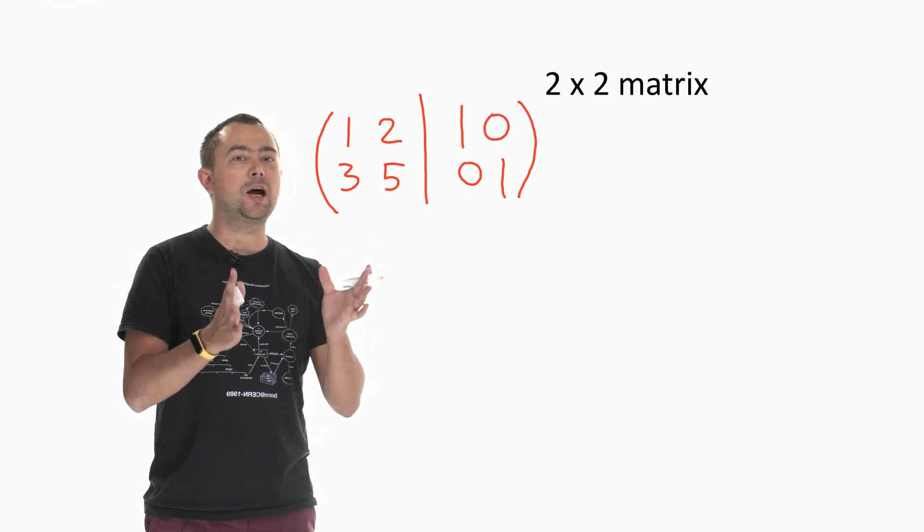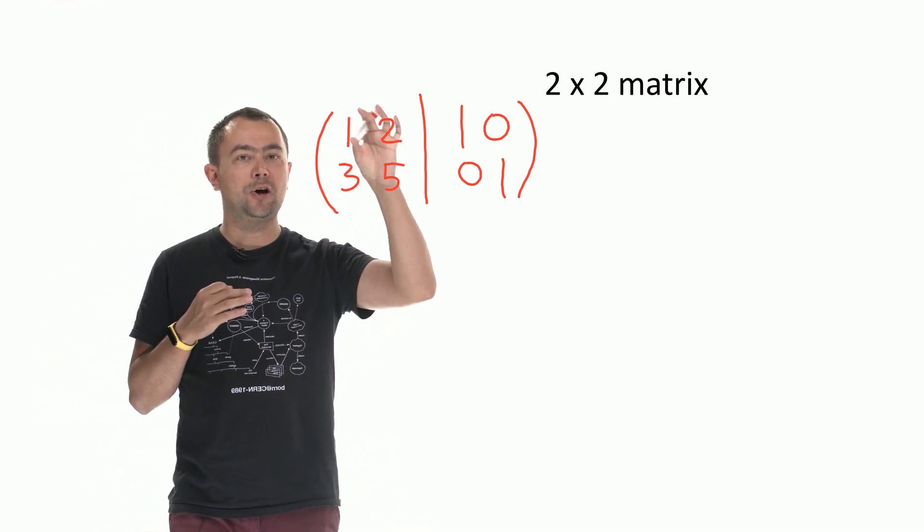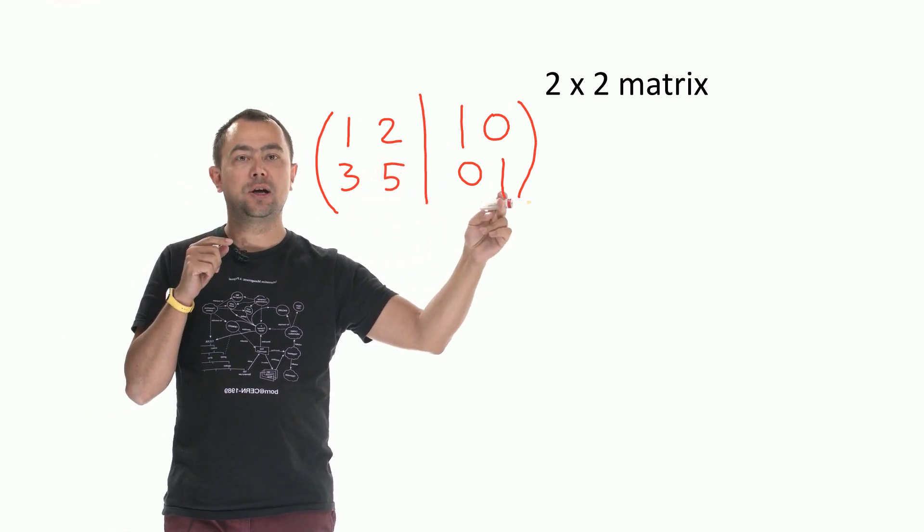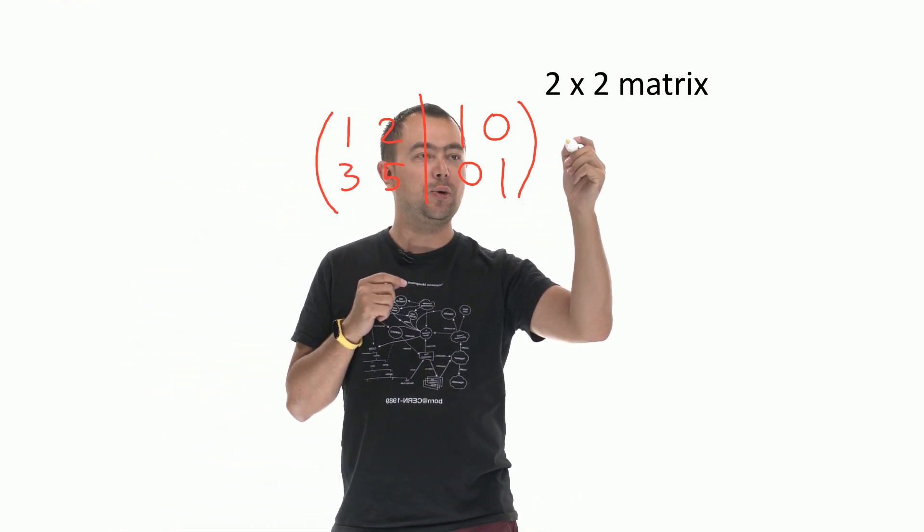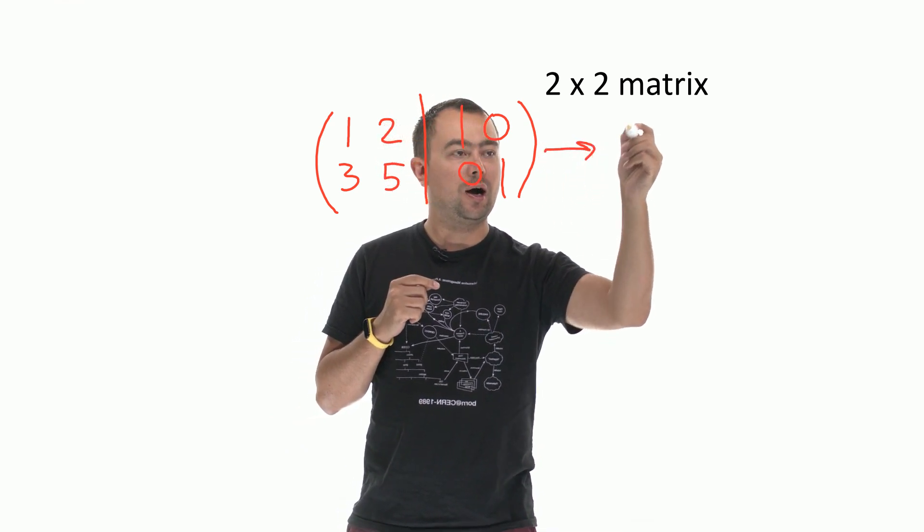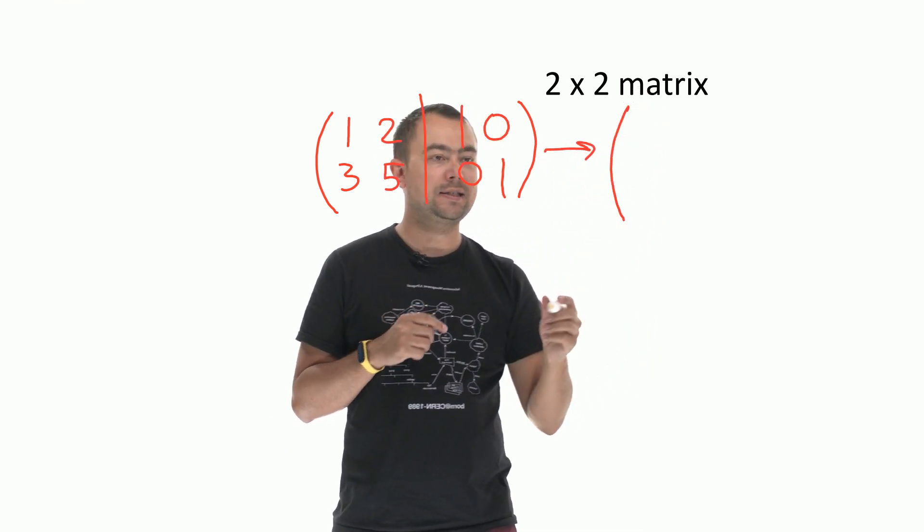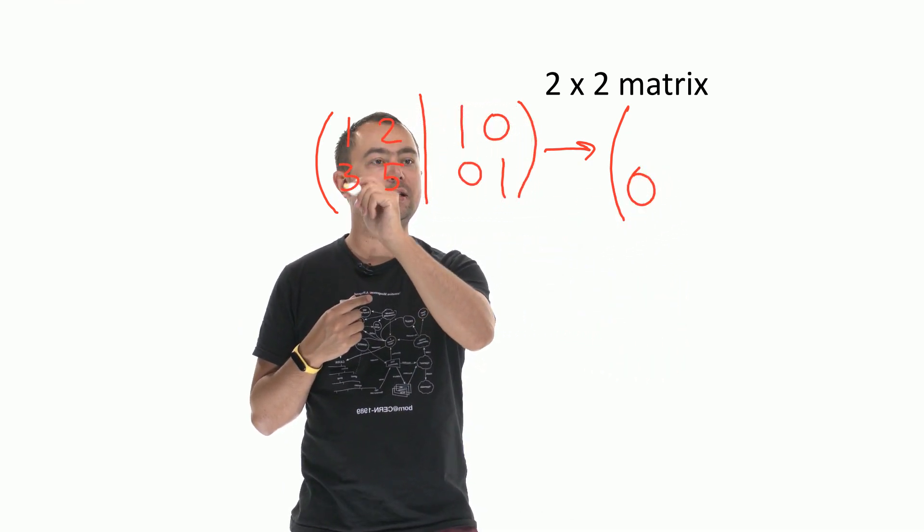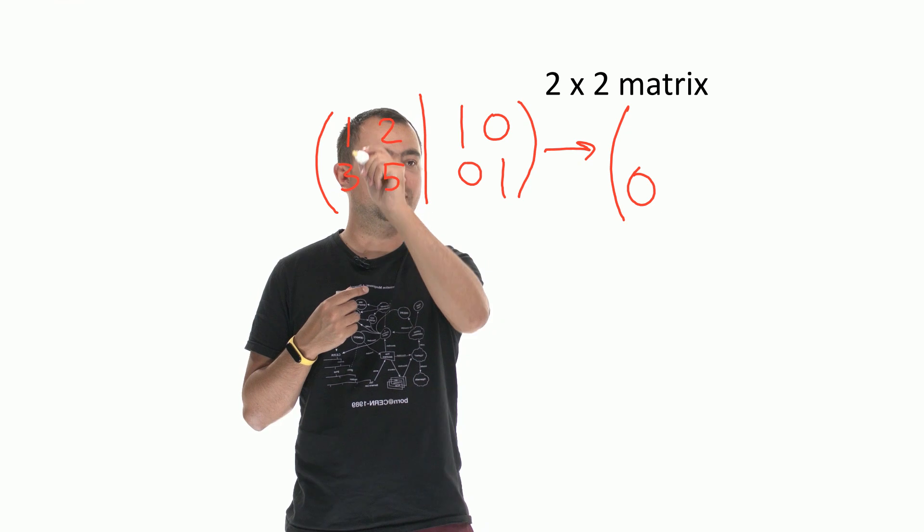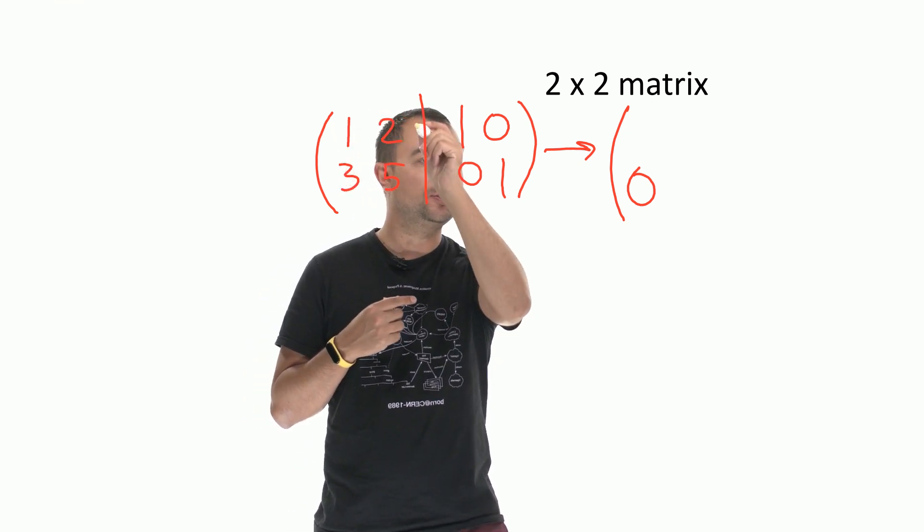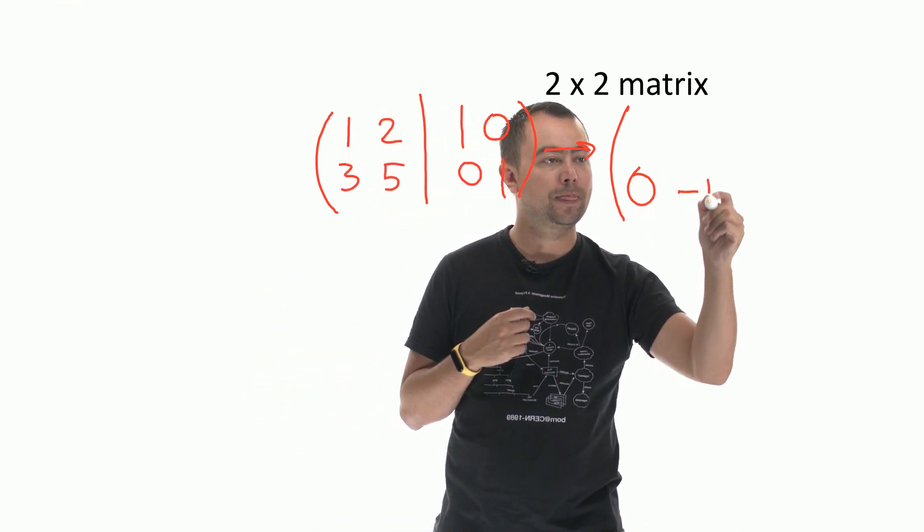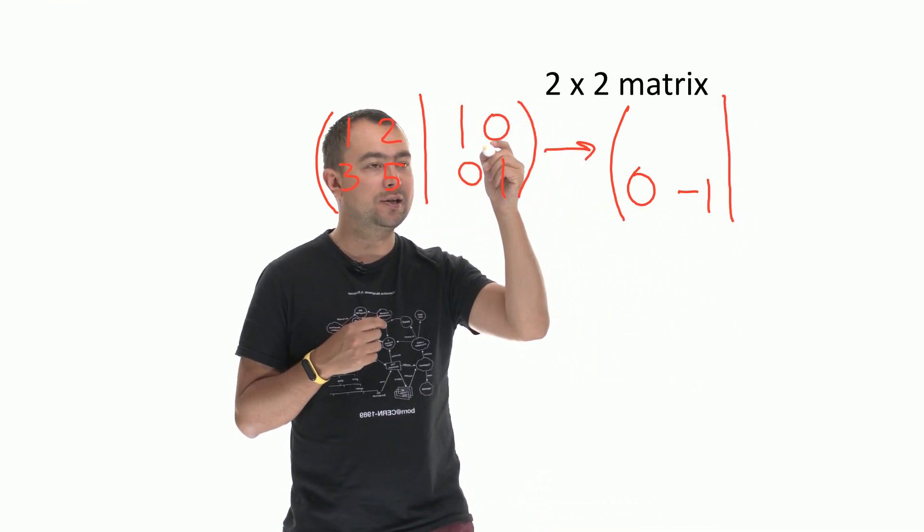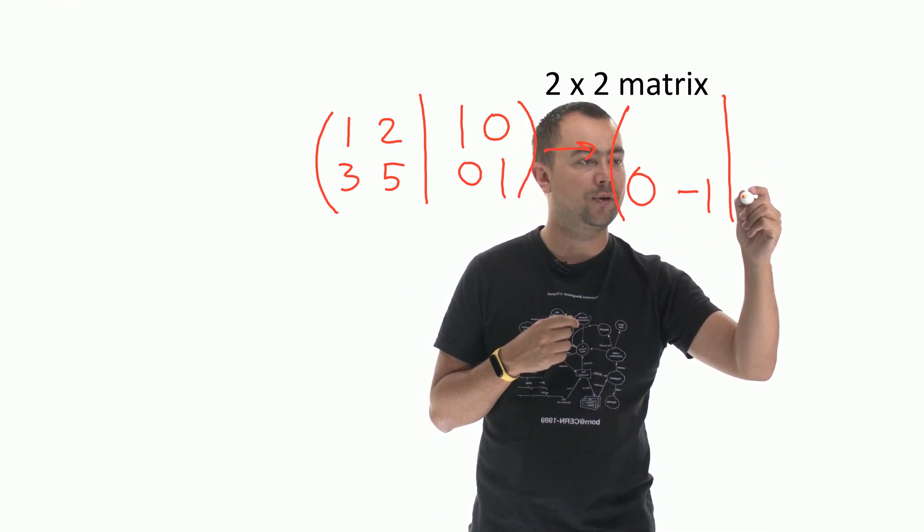So the first thing I want to do is I want to multiply the first row by 3 and subtract it from the second row. So what do I get? I get 0 because 3 minus 3 times 1 is 0. 5 minus 2 times 3 is minus 1. So 0 minus 3 times 1 is minus 3.